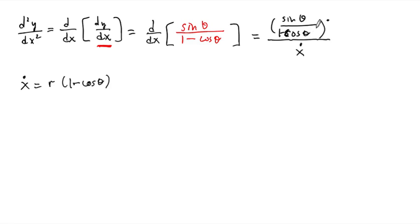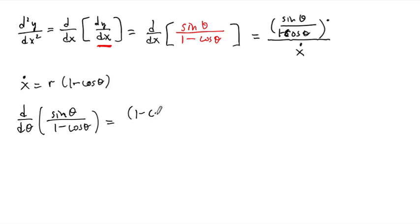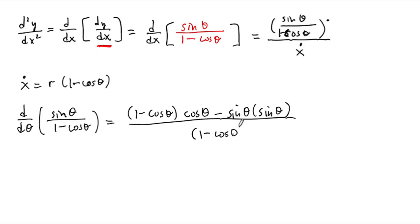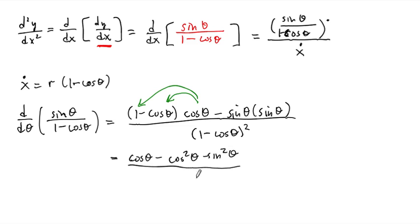On the top, we take d/dθ of sine theta divided by 1 minus cosine theta, which requires the quotient rule. The quotient rule gives us: 1 minus cosine theta times cosine theta, minus sine theta times sine theta, all over 1 minus cosine theta quantity squared. Multiplying this out, we get cosine theta minus cosine squared theta minus sine squared theta over 1 minus cosine theta squared. And cosine squared theta plus sine squared theta simplifies to 1, so that portion is just minus 1.